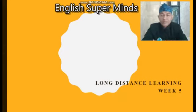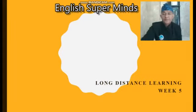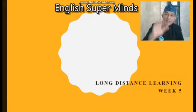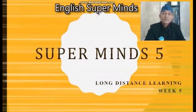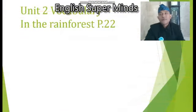Assalamualaikum warahmatullahi wabarakatuh. Okay students, let's start our lesson by Basmalah. Bismillahirrahmanirrahim. Long Distance Learning Week 5 — PJJ Pembelajaran Jarak Jauh Pekan Kelima. Welcome to Superminds 5, Unit 2: Vocabulary in the Rainforest, page 22.